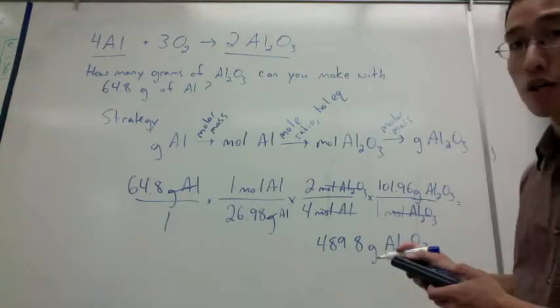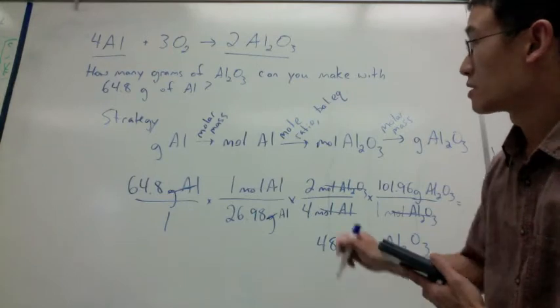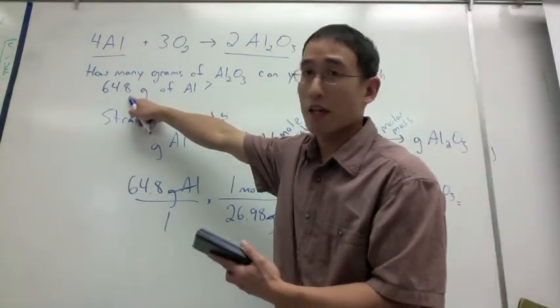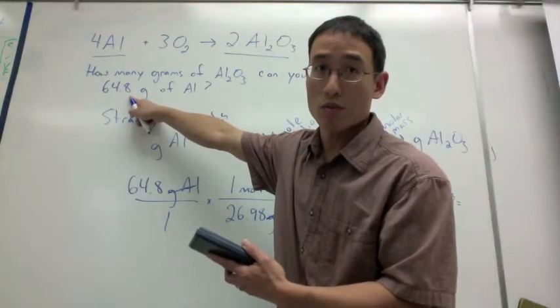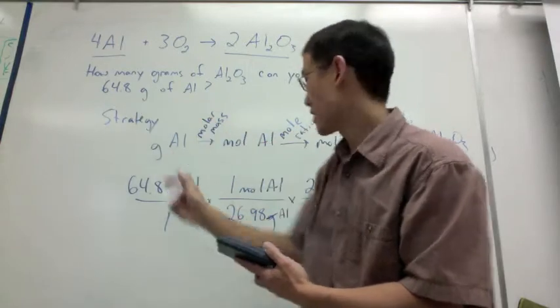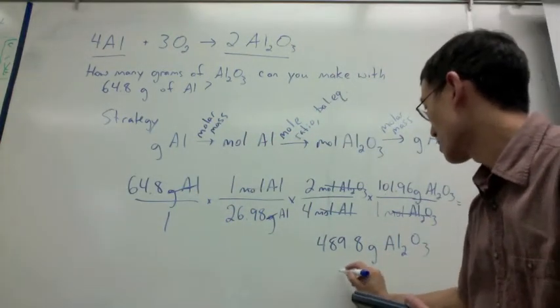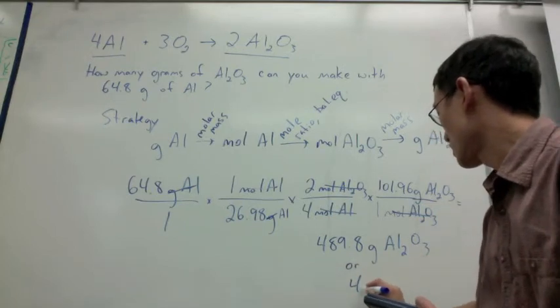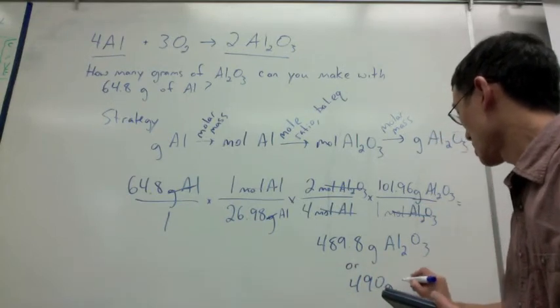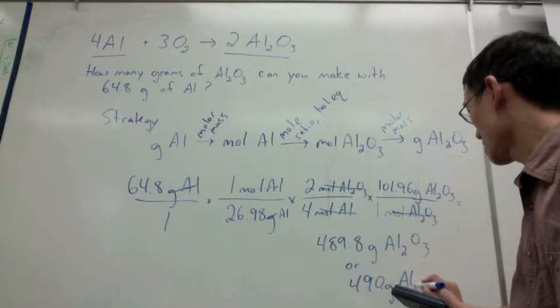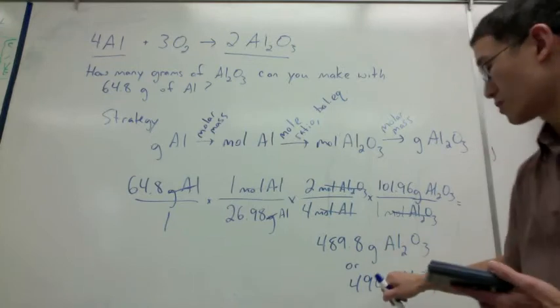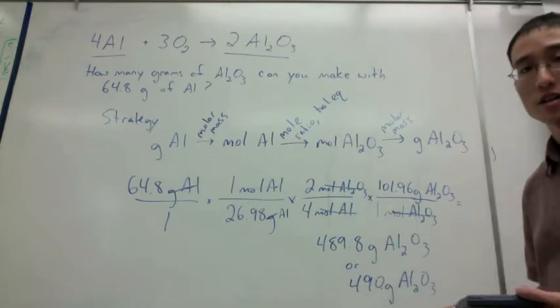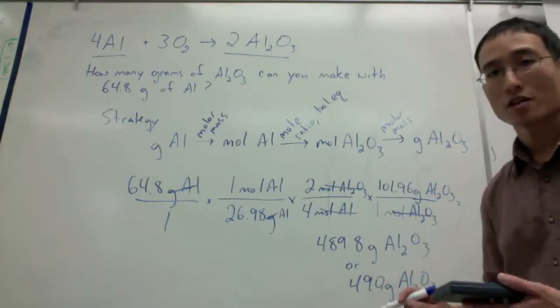Or if we're counting for significant figures, since 64.8 was my original number in the problem, it only has three significant figures, you can round this to 122. We'll put a decimal point there to signify that that is our third significant figure.